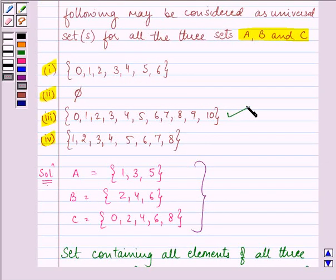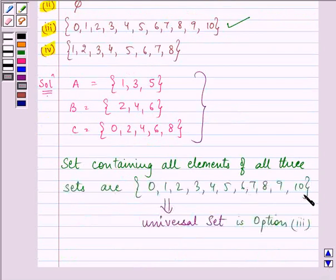So, I hope you enjoyed the session and now know why this has been a universal set, because all the elements of set A are present in this universal set. Set B is present and set C is also present.